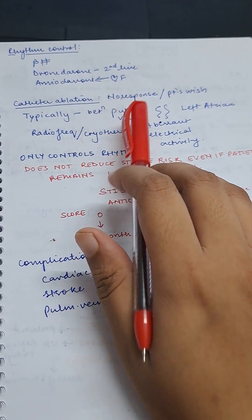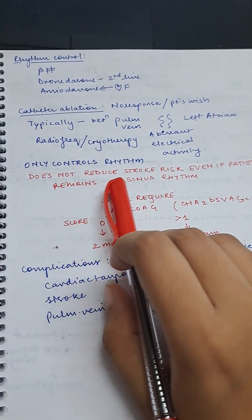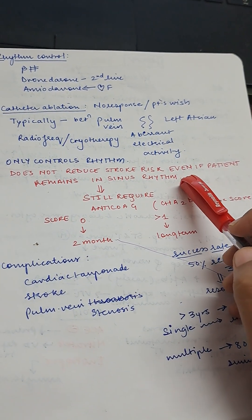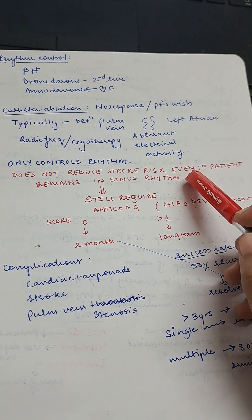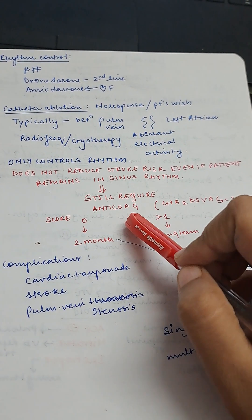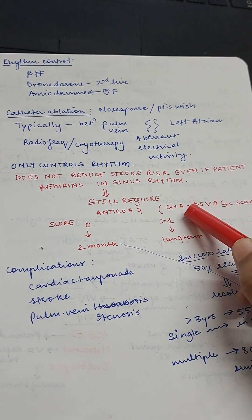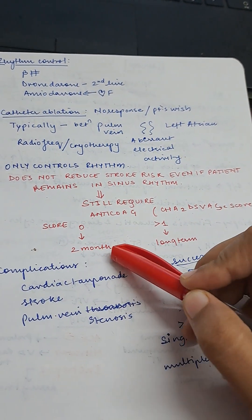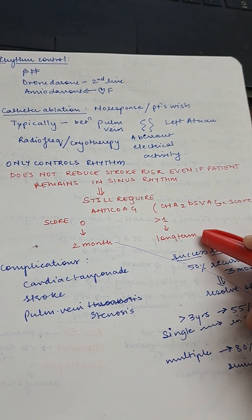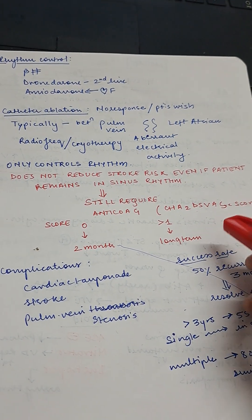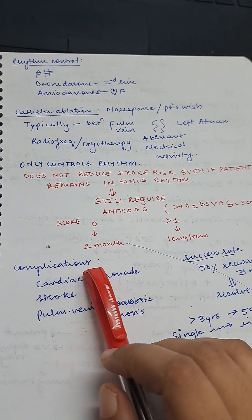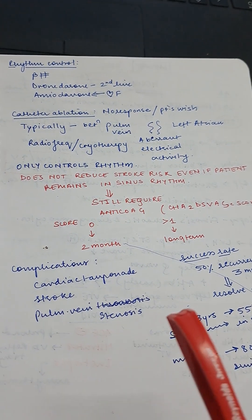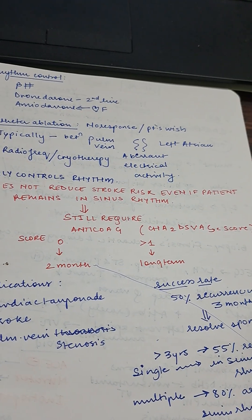Counsel the patient that catheter ablation only controls rhythm — it does not reduce stroke risk even if the patient remains in sinus rhythm. Therefore, anticoagulation must still be continued. Recalculate the CHA2DS2-VASc score: if zero, give anticoagulation for two months; if more than one, give long-term anticoagulation. Complications include cardiac tamponade, stroke, and pulmonary vein stenosis.